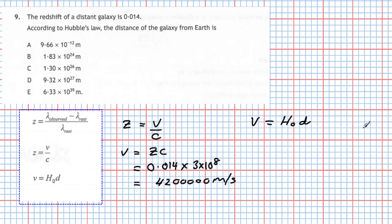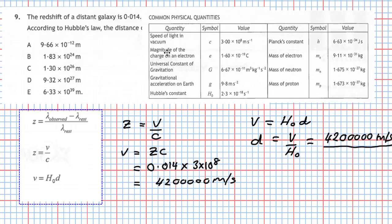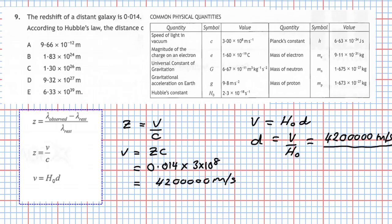A quick rearrangement gives d equals v divided by Hubble's constant. The recessional speed we worked out is 4.2 × 10⁶ metres per second. From the data sheet, Hubble's constant H₀ is 2.3 × 10⁻¹⁸ seconds⁻¹.